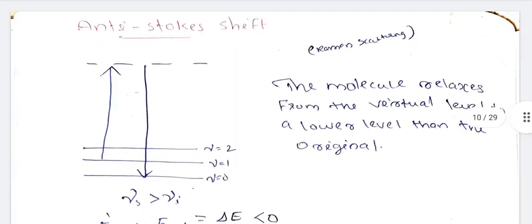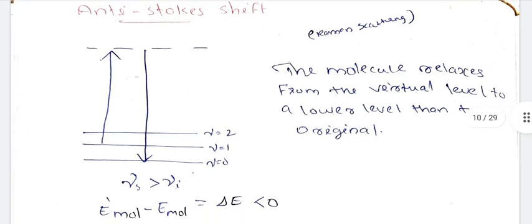Next is the anti-Stokes shift. In the anti-Stokes shift, the molecule relaxes from the virtual state to a lower level than the original state. The internal state is excited from a higher vibrational level to the virtual level, then relaxes to the ground state. That is, νs is greater than νi.